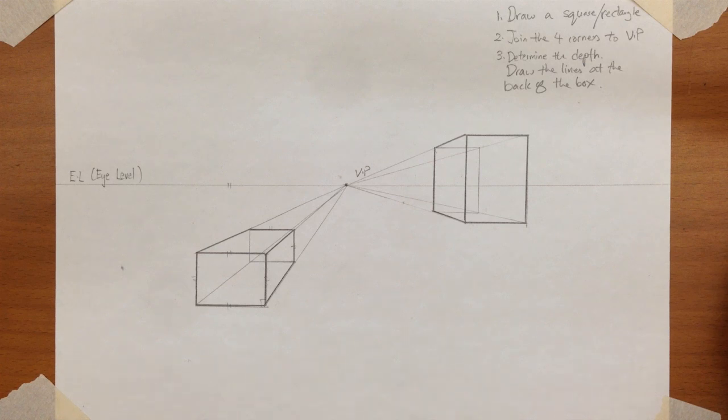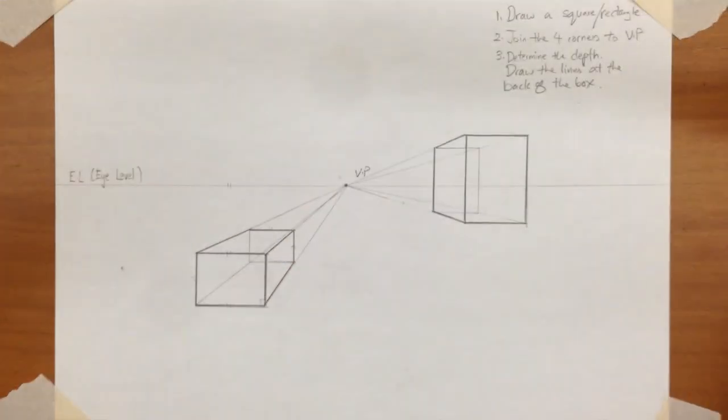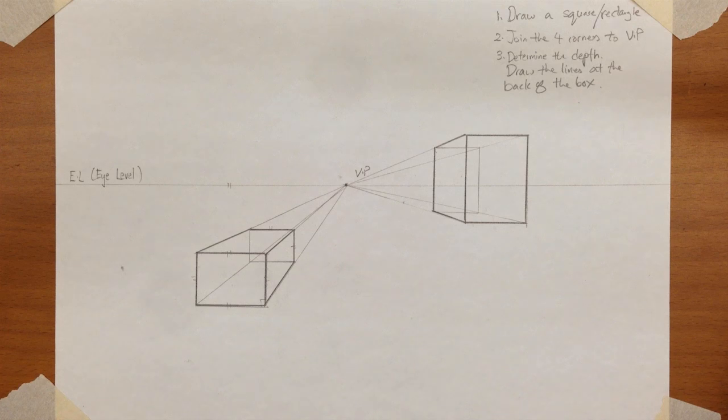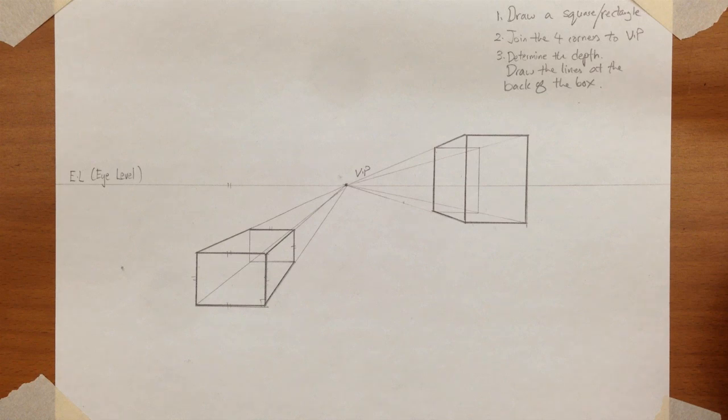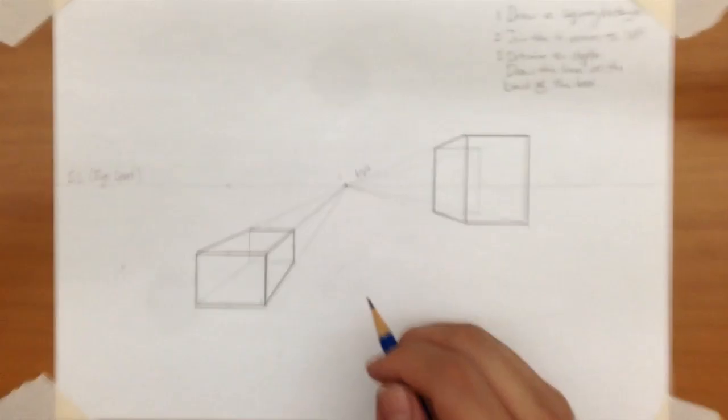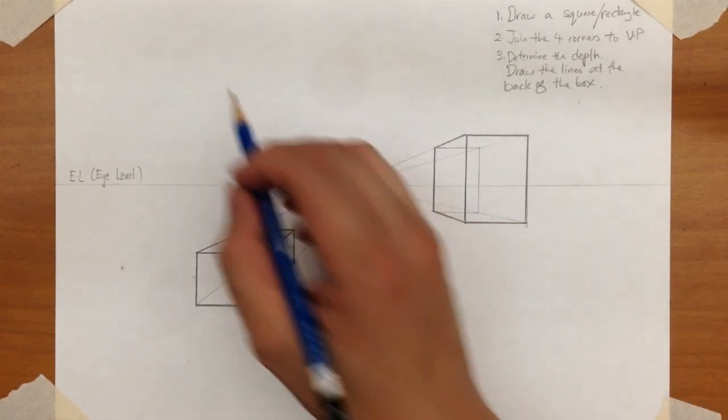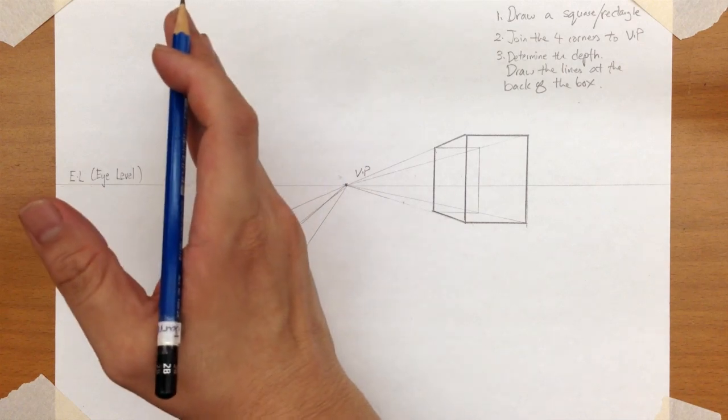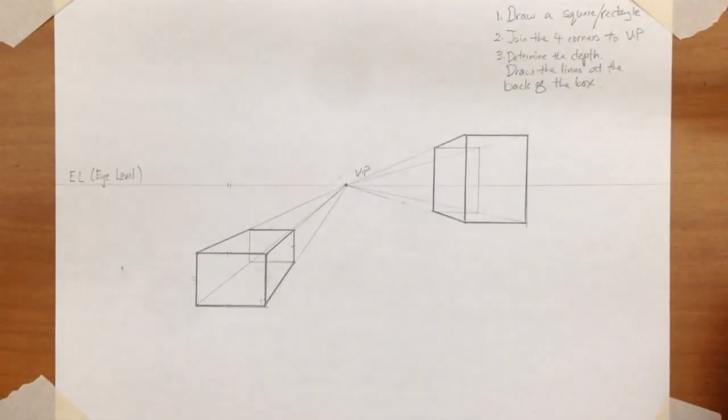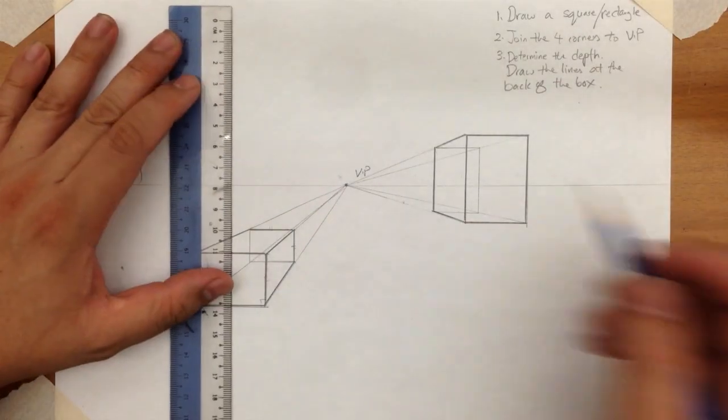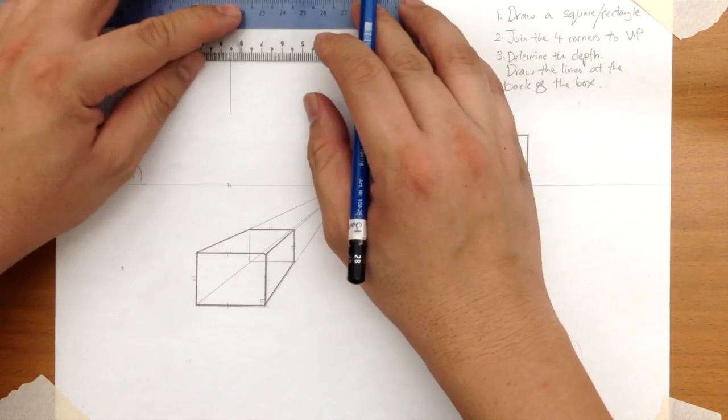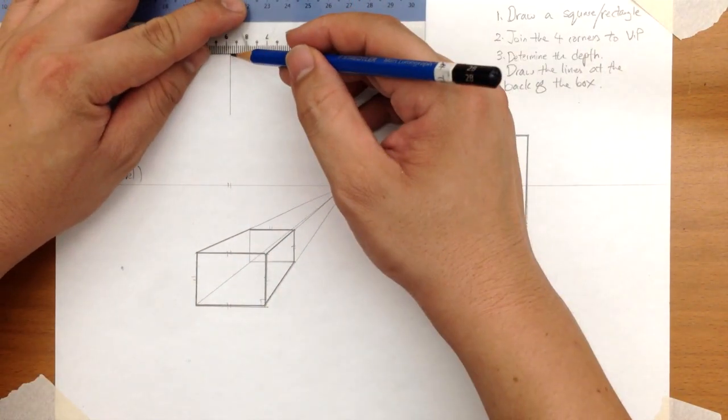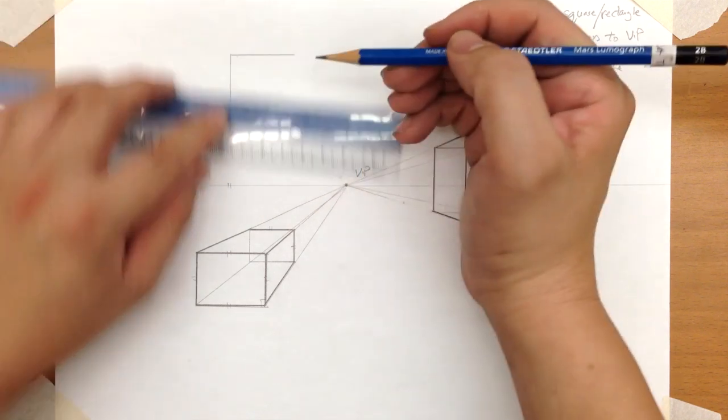Okay. Finally, let's draw one more that is on the top. Okay. Can you guess which sides would you see if you draw a box on the top above the eye level? Yes. You will see the front and you will see the bottom. And in this case, we are going to draw it on the left hand side. So you will probably see the right hand side also. So let's go ahead. One more box. Step one, draw a square rectangle.